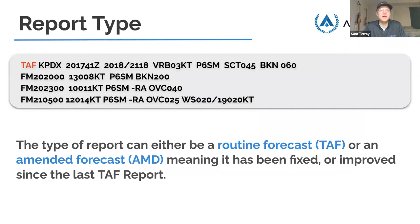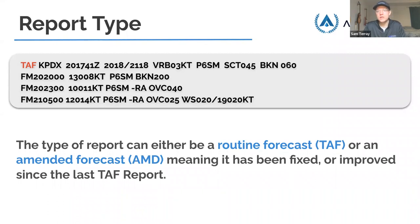Report type for TAFs: it can be either a routine forecast (TAF) or an amended forecast (AMD) — amended means it's been corrected since the last TAF. TAFs are not automatic reports; there's actually someone writing the TAF by compiling data. Humans make mistakes, and weather is unpredictable. You've seen the forecast say 20% chance of rain and then it pours all day — even in 2022 we're still not getting it right 100% of the time.